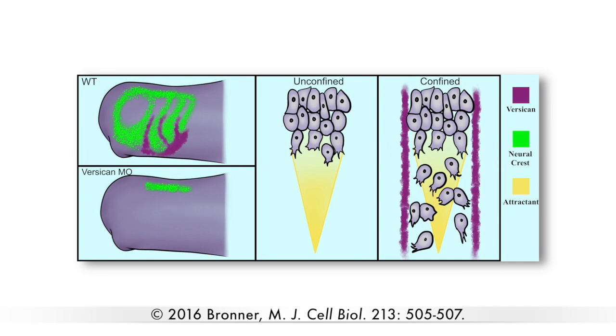Versican is therefore required to confine neural crest cells and promote their directional migration. But is the extracellular matrix molecule sufficient to direct the neural crest's collective movement?